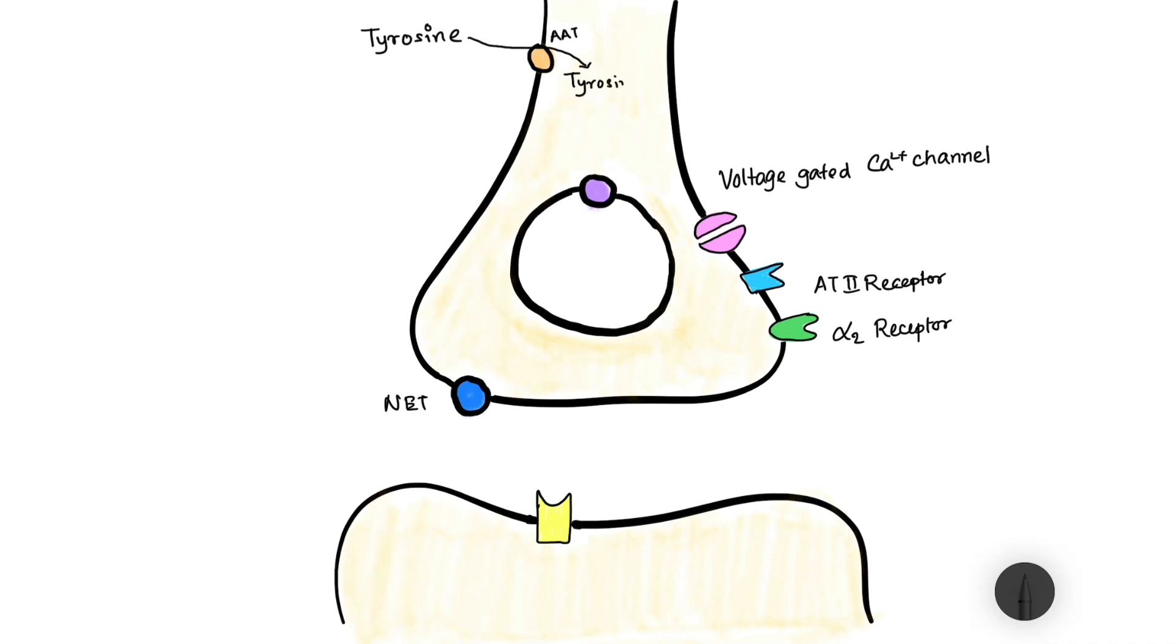Now this tyrosine within the nerve ending is converted into DOPA by tyrosine hydroxylase enzyme. Then this DOPA is converted into dopamine by DOPA decarboxylase.